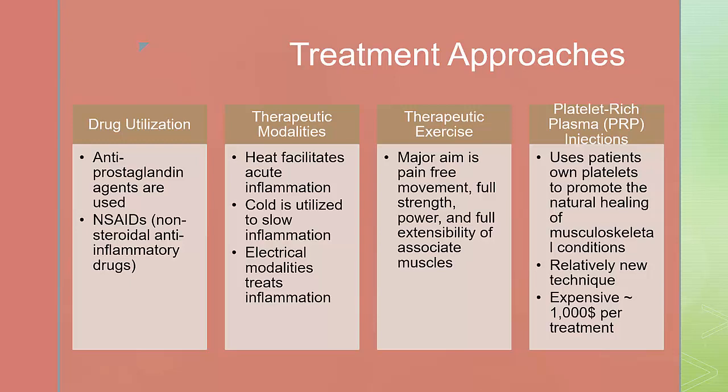Therapeutic exercises: the major aim of exercise is pain-free movement, full strength, power, and full extensibility of all associated muscles. Immobilization, while sometimes necessary, can have a negative impact on injury recovery. This may adversely result in biochemical changes to collagen, making mobilization difficult in the later stages of rehabilitation. Early mobilization, which is controlled, may enhance healing.